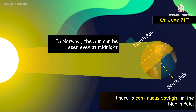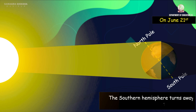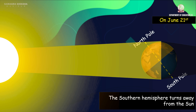But during this time, the southern hemisphere is turned away from the sun. The southern hemisphere receives slanting rays from the sun and therefore experiences winter season.